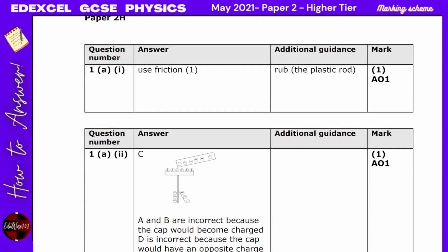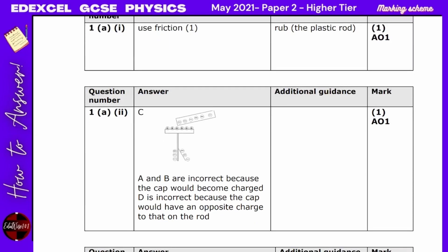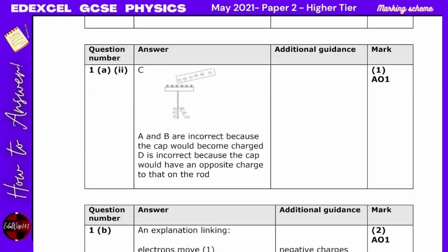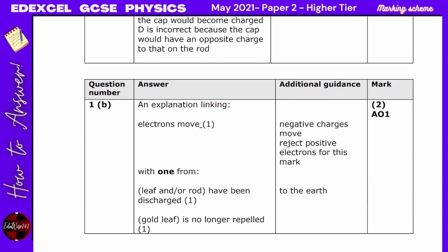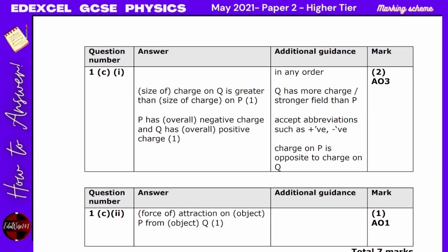For the marking scheme: Q1a — use friction; they are looking for the word 'friction' in the answer. Part 2 — the option was C. The electrons moved and the electroscope has been discharged, so it's no longer repelled. The charge on Q is greater than that of P; P has a negative charge whereas Q is positively charged, and there is attraction on P from object Q.